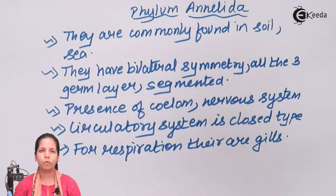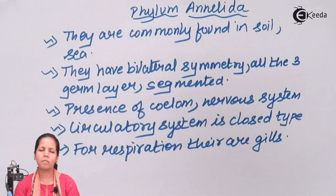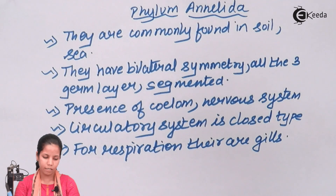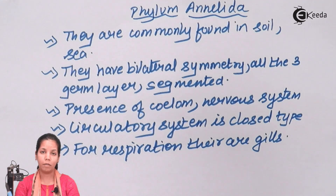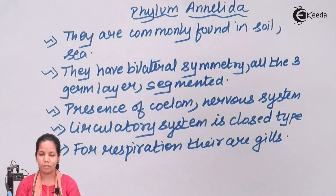Annelida phylum organisms could be found in fresh waters or they may sometimes be terrestrial in nature. These organisms have all three germ layers, that's the reason they are called triploblastic in origin, and we all know that their symmetry is bilateral.